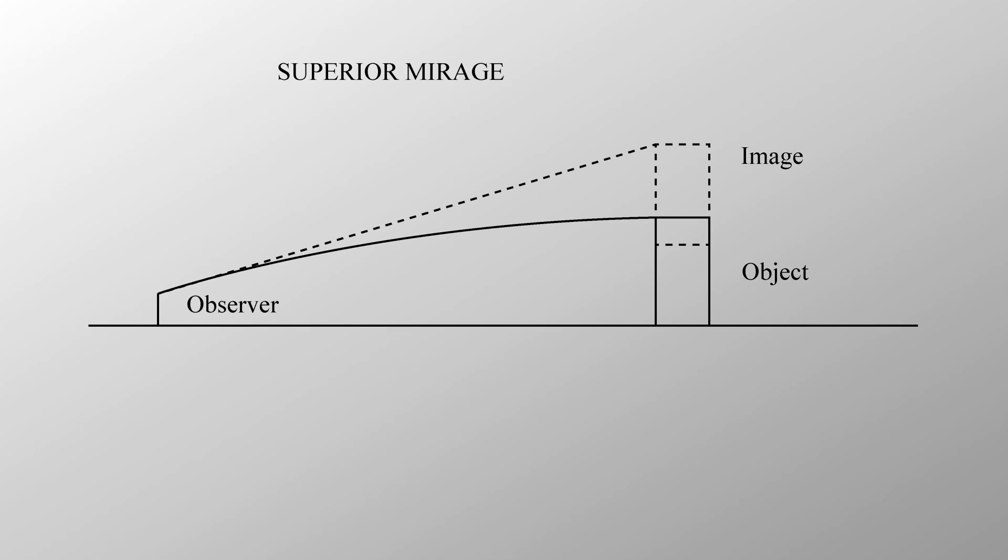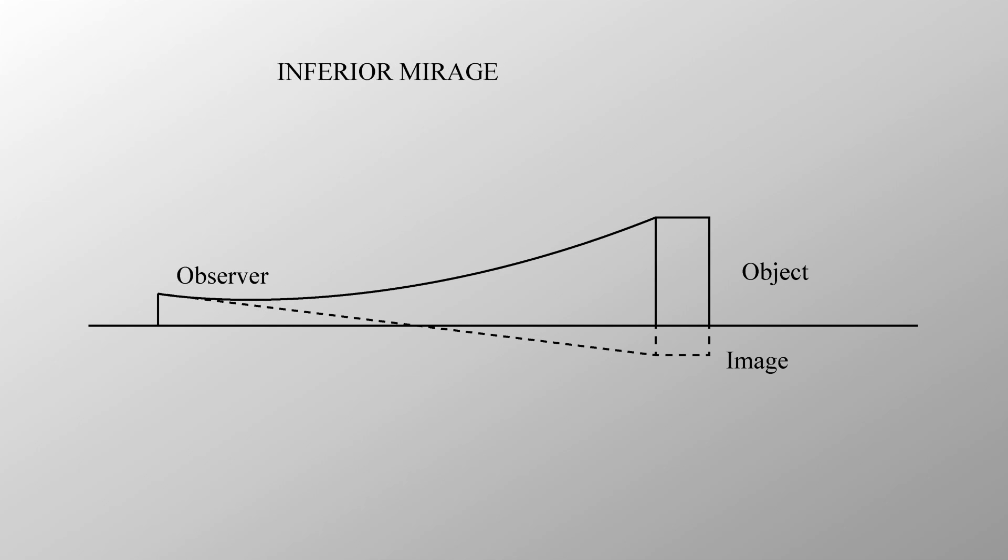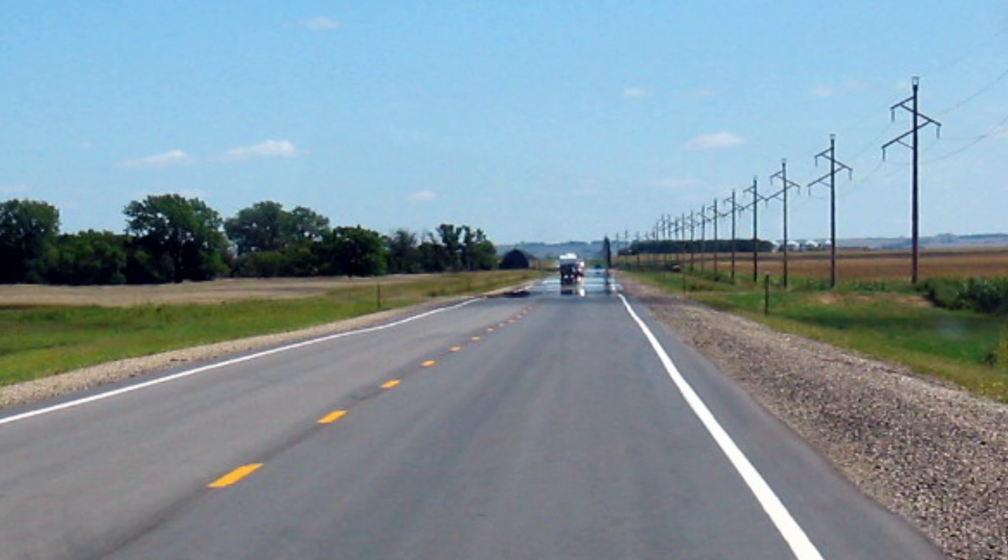What Robotham saw was a superior mirage, an illusion caused by light bending down. If you have hot air near the ground instead, like above a road on a hot summer day, you get an inferior mirage. Light bends up. It looks like there's water on the road, but it's actually a distorted image of what's above the horizon. Typically the sky.